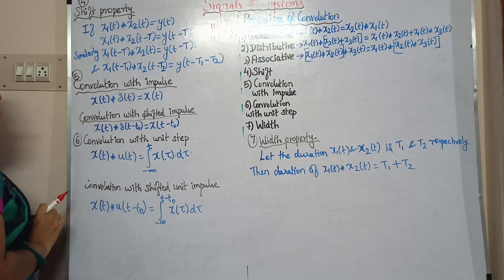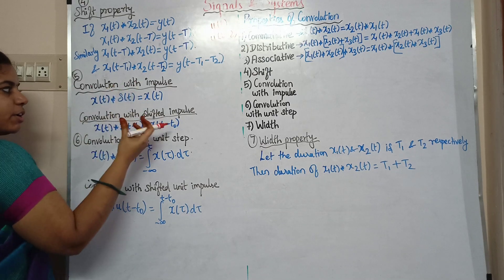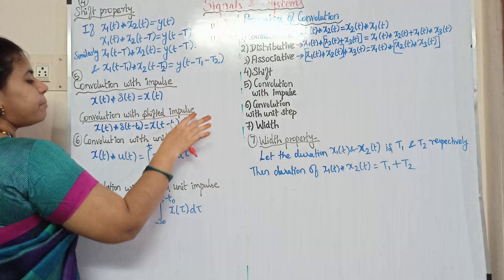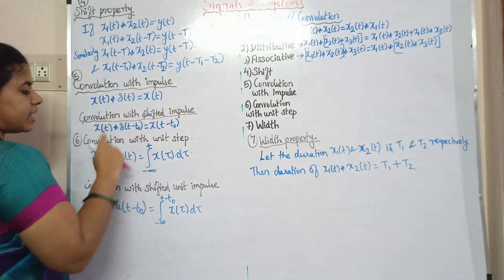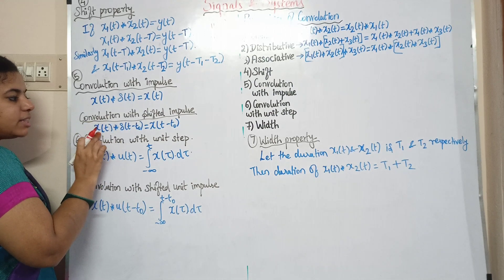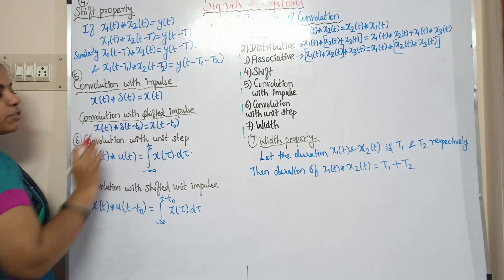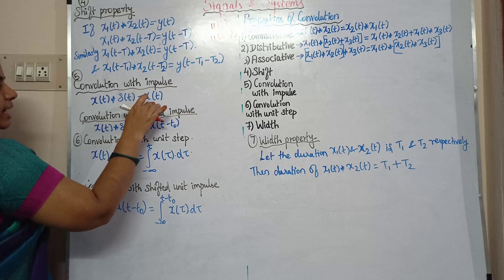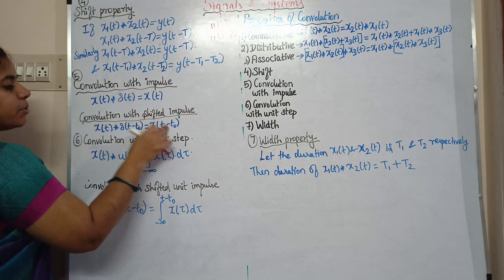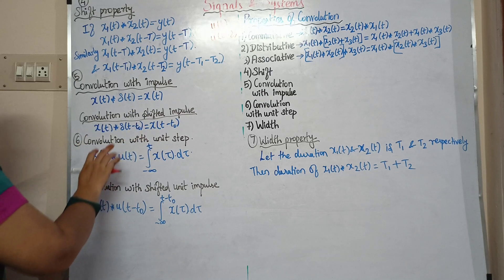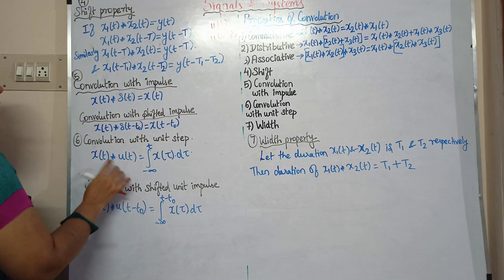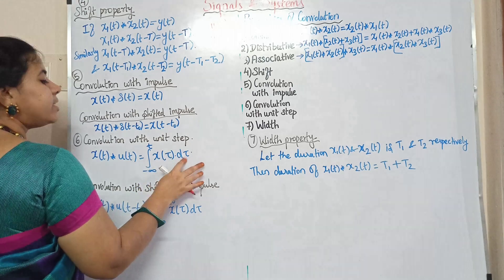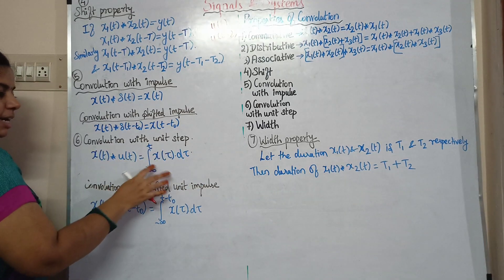Fifth property — convolution with the impulse. If we convolve a signal with the impulse signal, we get the same signal back. Convolution with the shifted impulse: if the impulse is shifted, the output reflects that shift, giving x(t minus t0). Convolution with the unit step: convolving a signal with the unit step is equivalent to integrating from minus infinity to t of x(τ) dτ. With a shifted unit impulse, the integration limit changes from minus infinity to t minus t0.